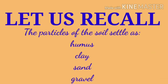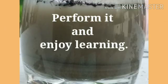Let us recall the particles of the soil settle as follows: the top layer is humus, then clay, then sand, and the bottom layer is of gravel.